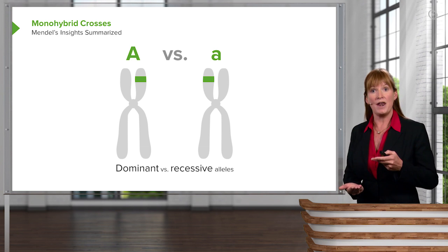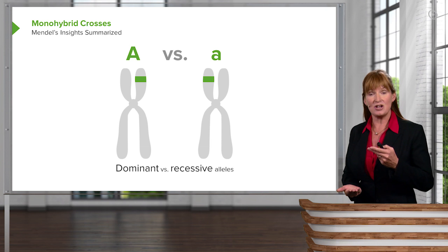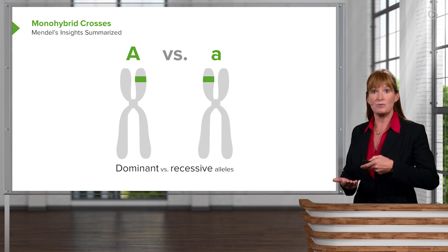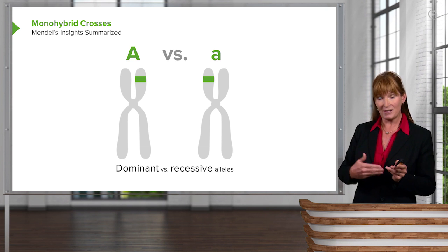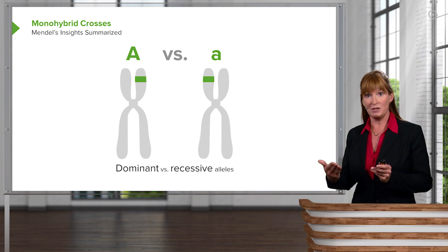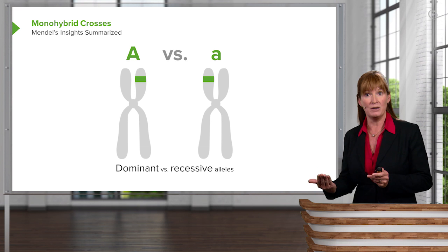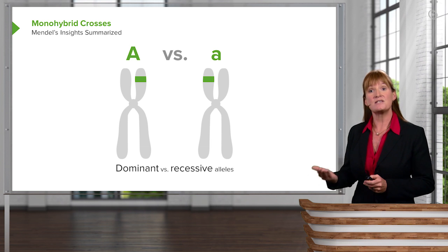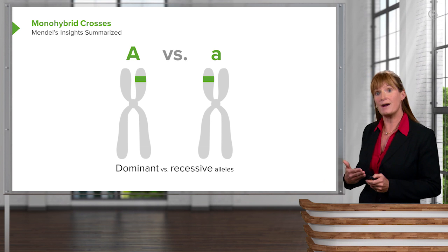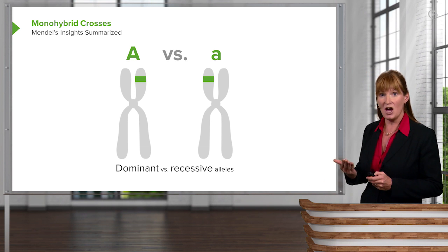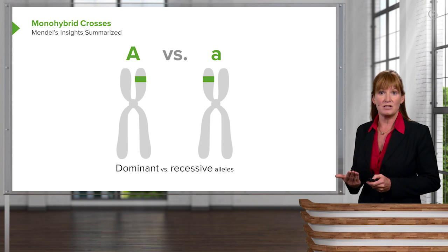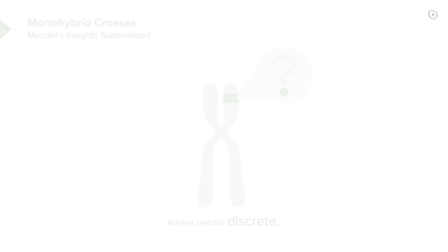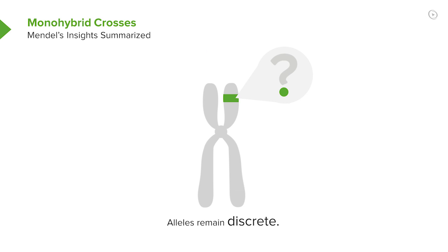He also gained the insight of dominant versus recessive, such that one trait — the dominant trait — would be the one that you saw, for example purple in the purple flowers, versus the recessive trait, which is the one that was not seen in the F1 generation.